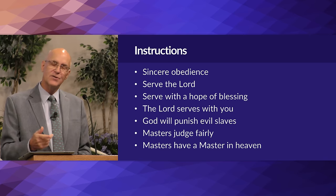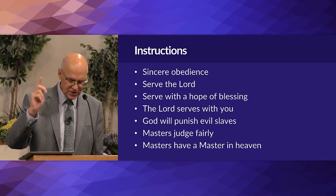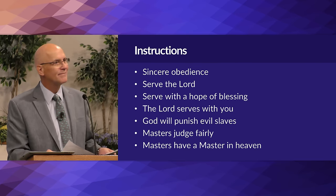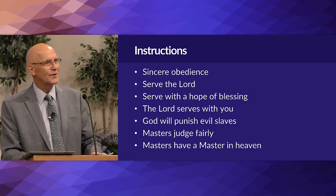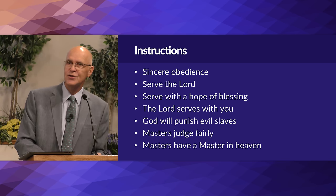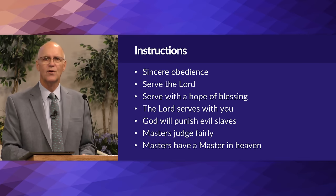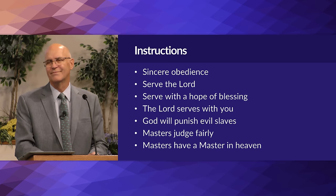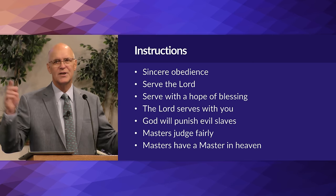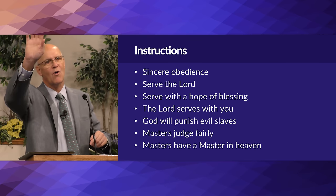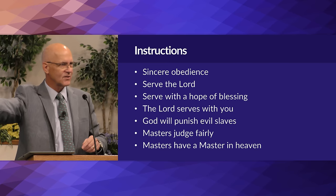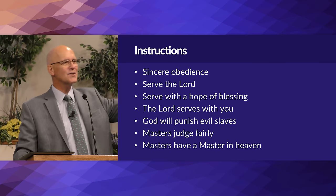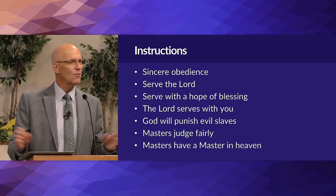The early church recognized no status difference between slave and master - everyone sat together in the assembly. That was one way the early church signaled not 'let's start a revolution' but rather 'how does God see you?' When the master and the slave came into the assembly, there wasn't a back row for slaves and a front section for masters - everyone sat together.